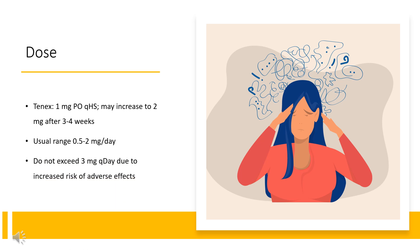Dose — Hypertension: Tenex, 1mg PO QHS, may increase to 2mg after 3 to 4 weeks. Usual range 0.5 to 2mg per day. Do not exceed 3mg per day due to increased risk of adverse effects. Heroin withdrawal, off-label: 0.03 to 1.75mg per day PO for 5 to 15 days.